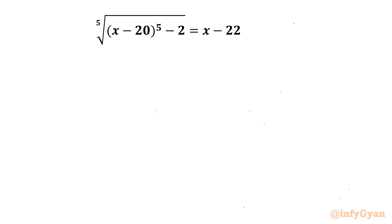Welcome to Infigyan friends. In today's video, we are having one very interesting question from Radical Equations. We will be solving the 5th root of (x minus 20) to the power 5, minus 2, equal to x minus 22, and here we will find all possible solutions. So let's get started with our equation itself.